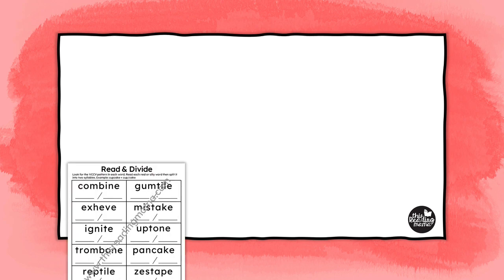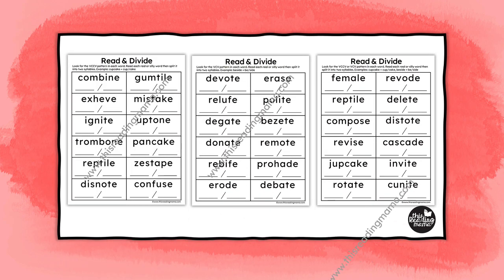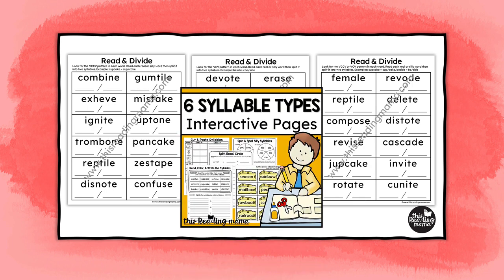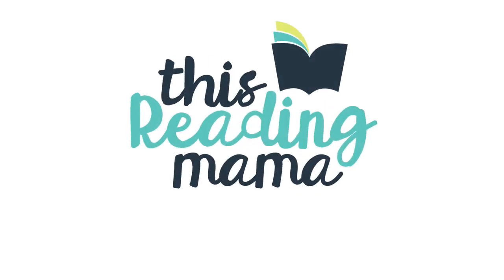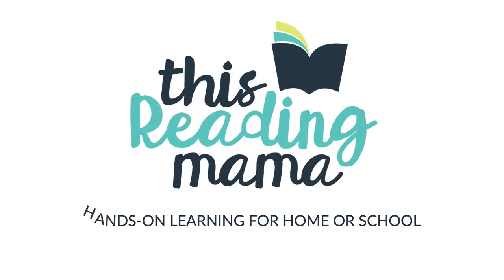I'm sharing some free silent E syllable printables on my blog you can use to help your learners divide and read real and silly words. I also have a six-syllable-type interactive pack in my shop. The links to all these resources are in the description below. Thanks for joining me at This Reading Mama, where you'll find hands-on learning for home or school.